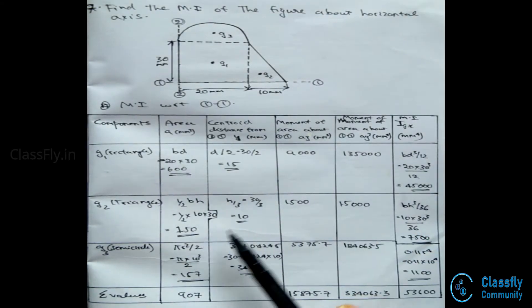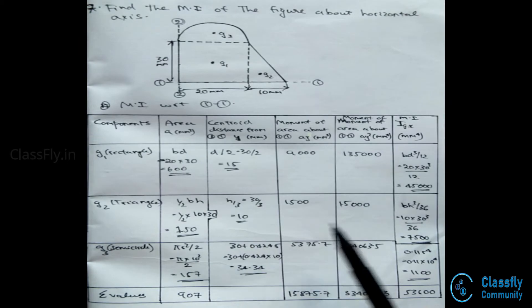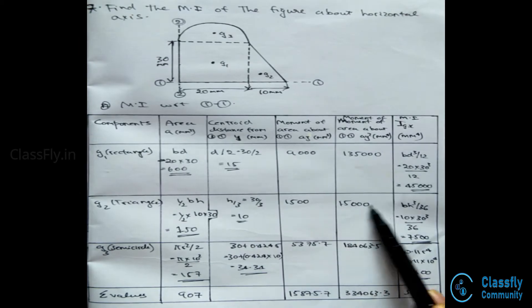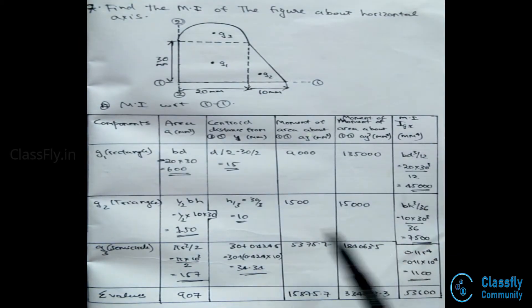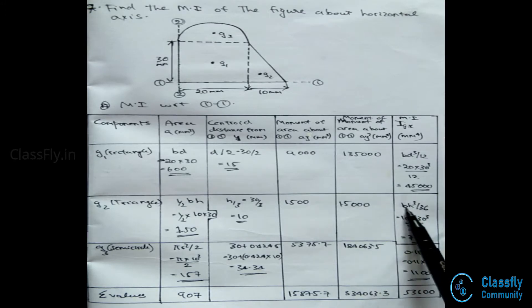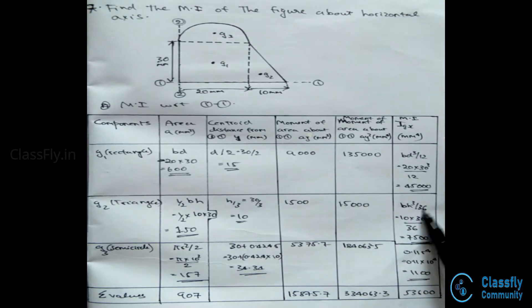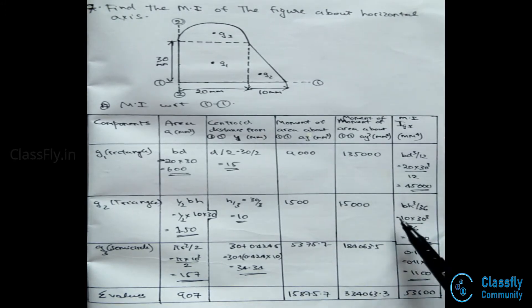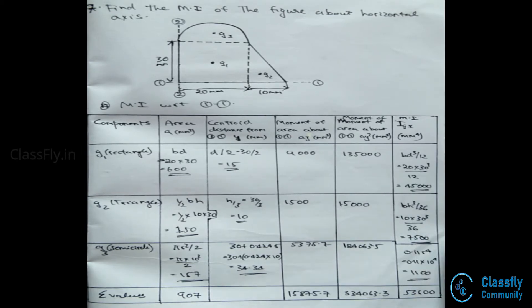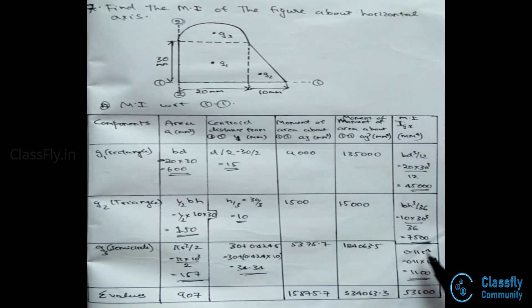A·y² for the triangle will be 150×10², which equals 15000. The moment of inertia Igx is given by bh³/36, so 10×30³/36, which equals 7500.